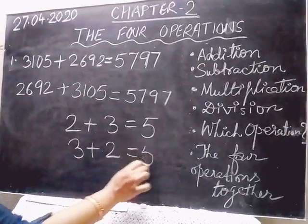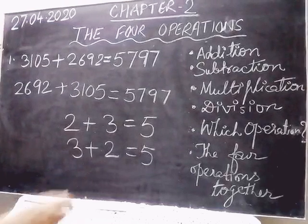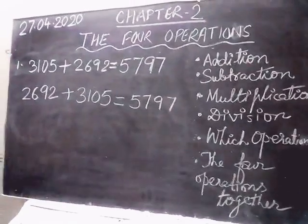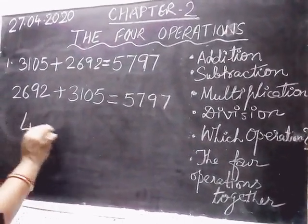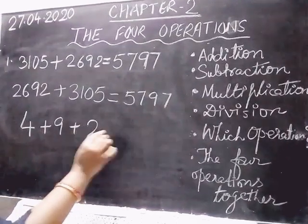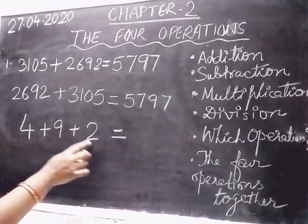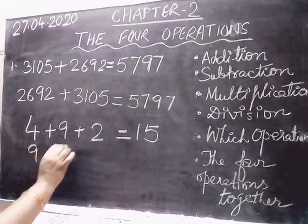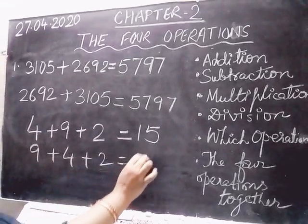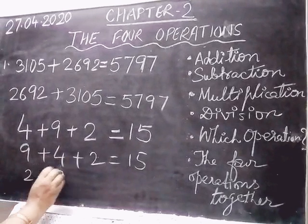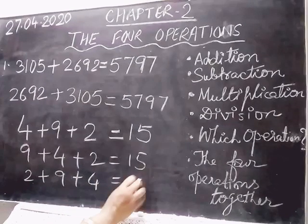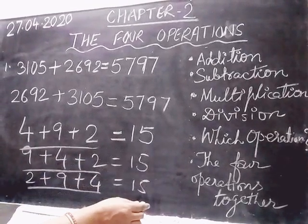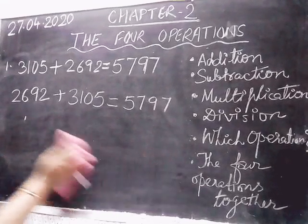When we change the order of any addition question, the sum does not change. For example: 4 plus 9 plus 2 equals 15. If we change the order to 9 plus 4 plus 2, it is still 15. If we write 2 plus 9 plus 4, it is still 15. So when we change the order, the sum remains the same.